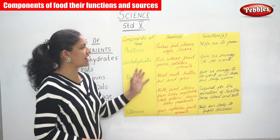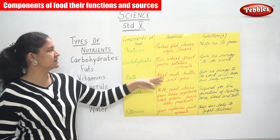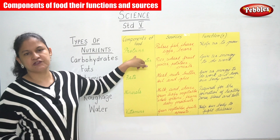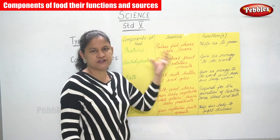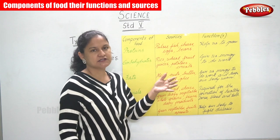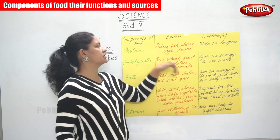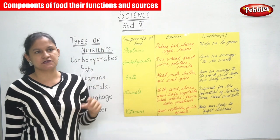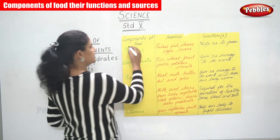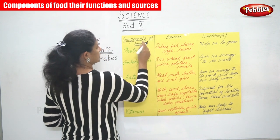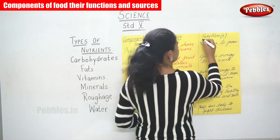In front of us we have a small chart which we have divided based on the components of food — the important nutrients, what are the sources (for example, what does fish contain), and what is the function of each nutrient. Let us see each and every one in detail: the components, their sources, and their functions.